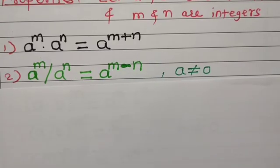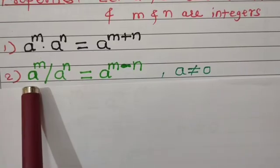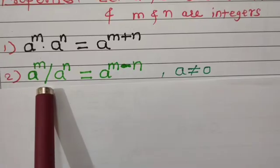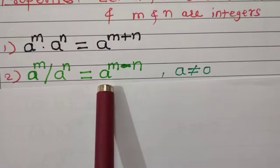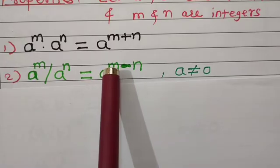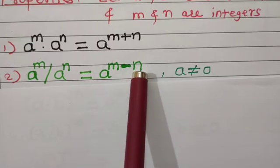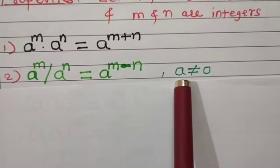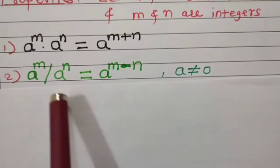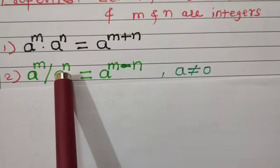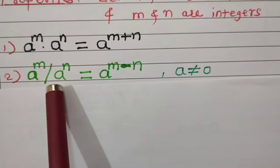Property number 2: a to the power m divided by a to the power n is equal to a to the power m minus n, assuming a is not equal to 0, because if the denominator is 0, the expression becomes infinite.